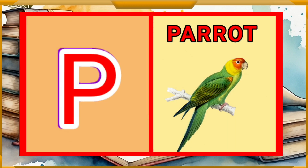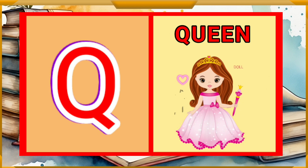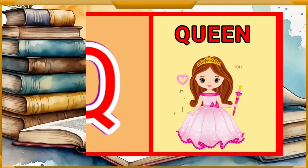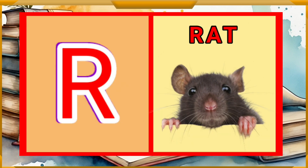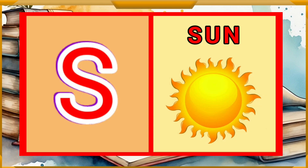P for parrot, U for queen, R for rat, S for sun.